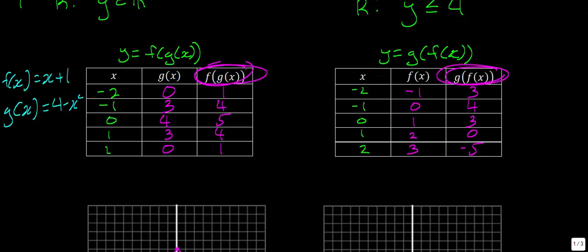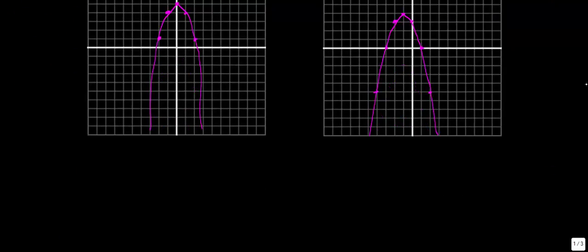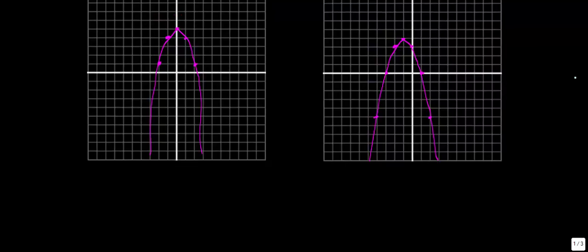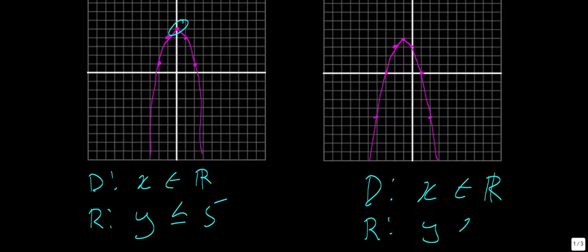Now let's determine the domain and range of the composite functions. For f of g of x: it's a quadratic going infinitely left and right, so x is a member of the reals. Looking at the graph, the highest value is at 5 and it goes downward, so y must be less than or equal to 5. For g of f of x: the domain is also x as a member of the reals, and the range is y less than or equal to 4.